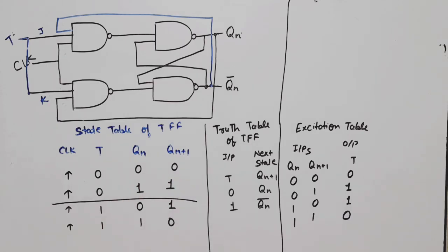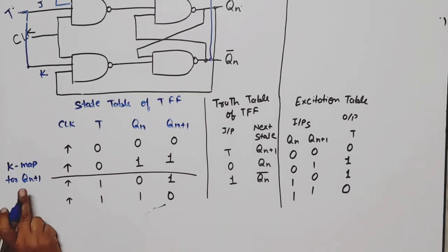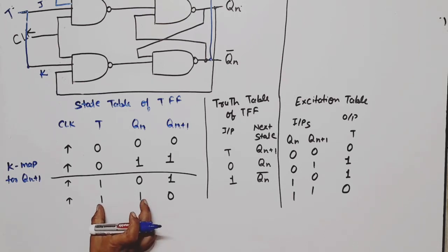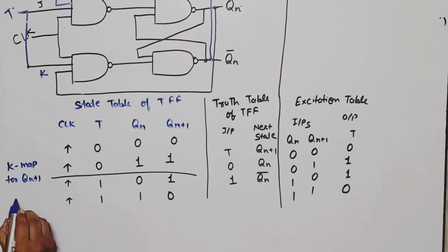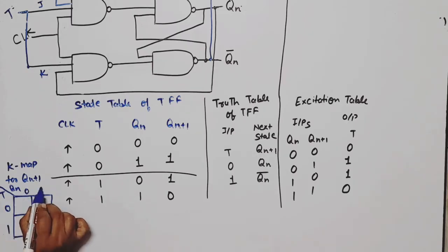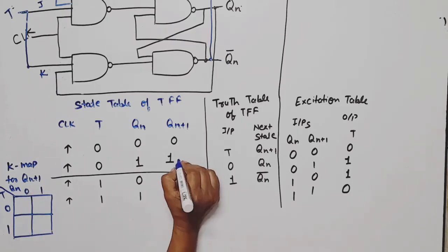Now we'll derive the characteristic equation. Characteristic equation means what will be the next state equation. In this, two variables means a two-variable K-map is required. You can take any axis for anything. Let me take this axis for T and here I have QN. T value is zero, T value is one, QN value is zero, QN value is one. What do we have to plot? QN plus one.